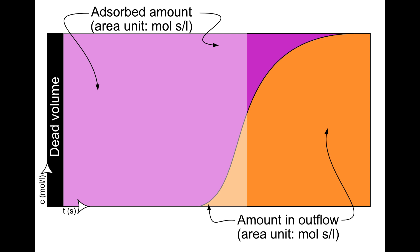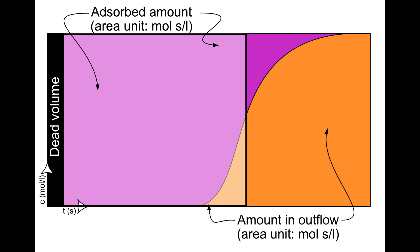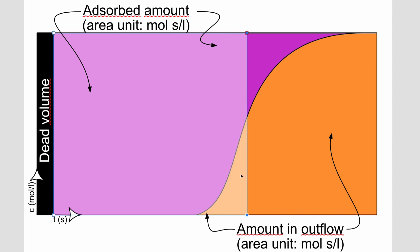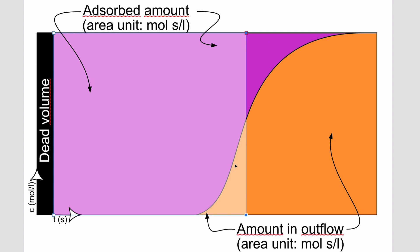We're looking for a rectangle that has the same area as the purple area. If the rectangle is drawn in a certain position, it does not cover the dark purple area at the top — that is part of the capacity of the column — but on the other hand, it includes the light orange area at the bottom, which is not part of the capacity. By changing the length of the rectangle, the relative size of the dark purple and light orange areas change. When the dark purple area not included in the rectangle equals the light orange area included in the rectangle, we have found a rectangle with the same area as the entire purple area. The length of this rectangle is measured in time and we call it T star.